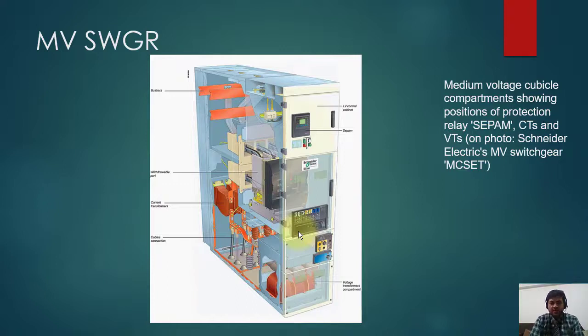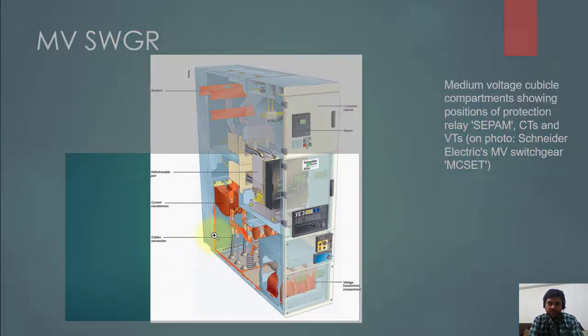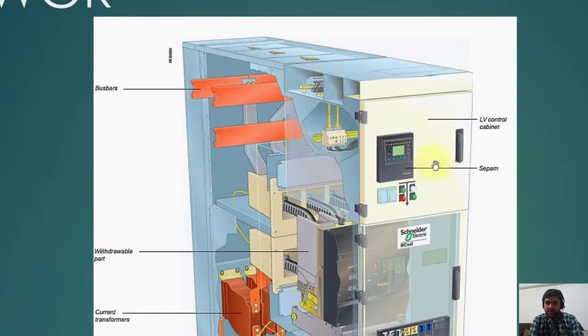How a medium voltage cubicle compartment looks like. This is an array. You can see here this is LV low voltage control cabinet. In this one you have all three relays installed here. Main relay is installed here. This one is test plug facility. This is another test plug facility.